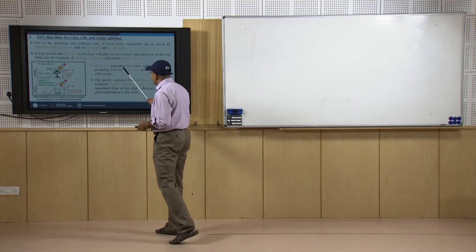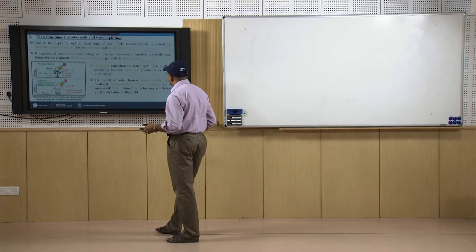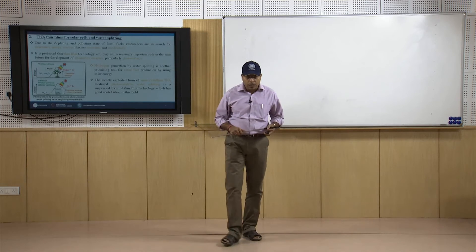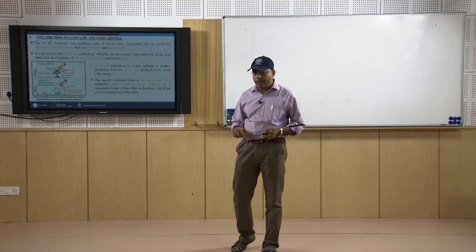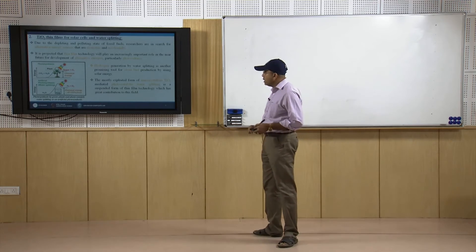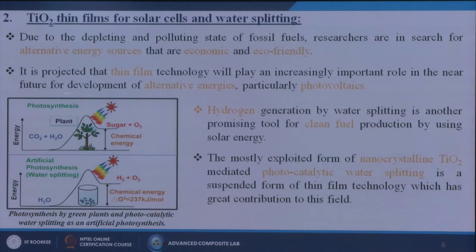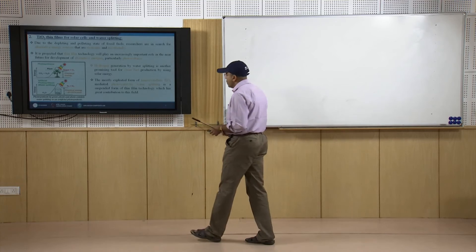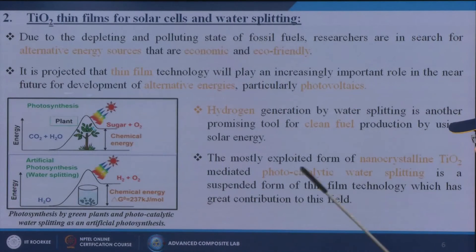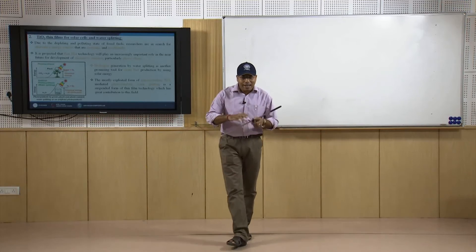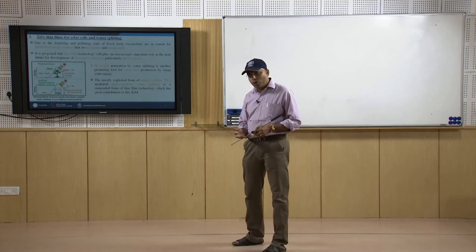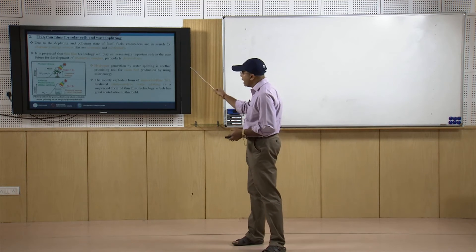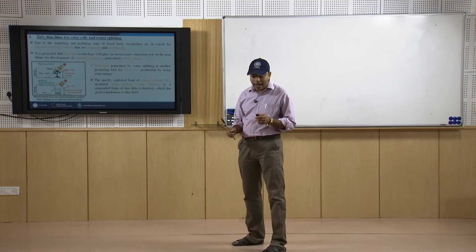Hydrogen generation by water splitting is another promising tool for clean fuel production using solar energy. High-end research is ongoing for hydrogen storage and production. The most exploited form of nanocrystalline titanium dioxide for mediated photocatalytic water splitting is a suspended form of thin film technology, which has made significant contributions to this field. This is another advantage of using functional coatings — changing material properties for different aspects.